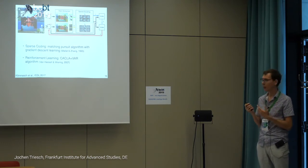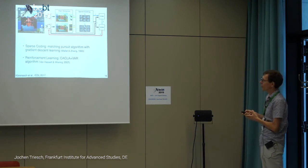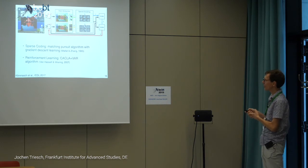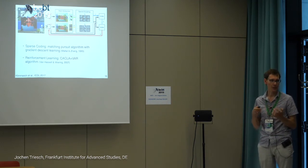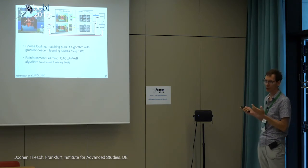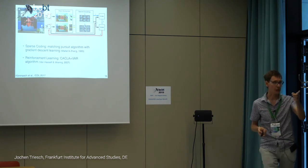The activity of these neurons in the visual cortex gets mapped onto an actor-critic reinforcement learning system. The exact sparse coding algorithm and reinforcement learning algorithm used doesn't matter much — we've played with different kinds, the principle is always the same and tends to work unless you do something very wrong.